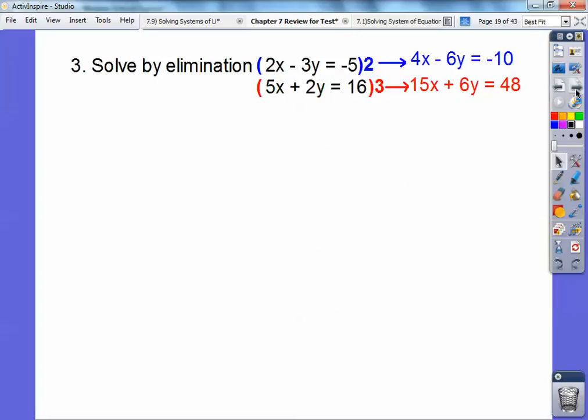This one's solved by elimination. I multiplied it. You can make these guys both 10s or make these guys both 6s. And 6s are easier to work with, especially since that's already negative and this one's positive. So all I had to do was multiply this equation times 2. That way I get a -6y. This equation times 3. That way it gets a positive 6y.